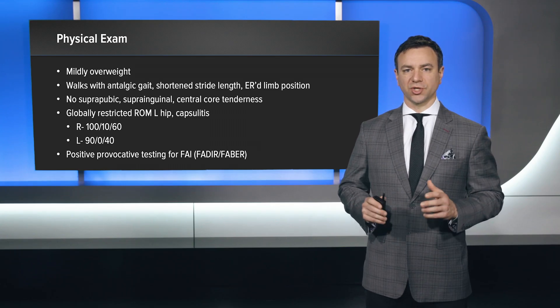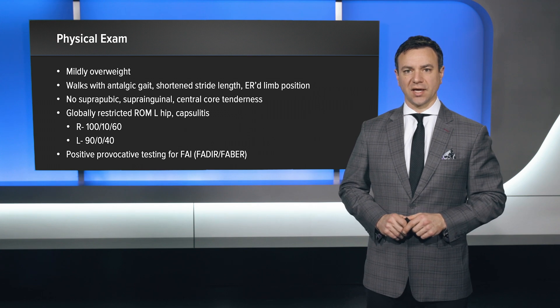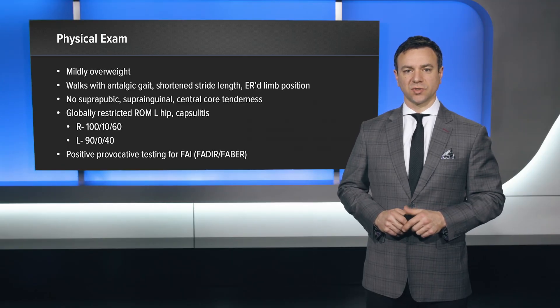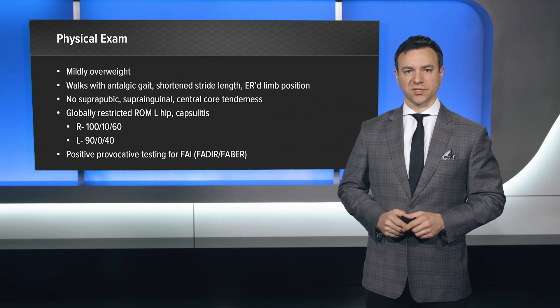On her physical exam, she was mildly overweight. She walks with an antalgic gait, incorporating a shortened stride length for comfort, and walked with a slightly externally rotated posture through the lower extremity. She did not have any suprapubic, superinguinal, or central core tenderness. She did have a globally restricted range of motion of her hip with significant capsulitis. Range of motion was compromised on her affected side: 90 degrees of flexion with essentially zero internal rotation and mild external rotation before the point of pain, in comparison to her contralateral extremity. She also has positive provocative testing for femoroacetabular impingement, including positive FADER and FABER exams.